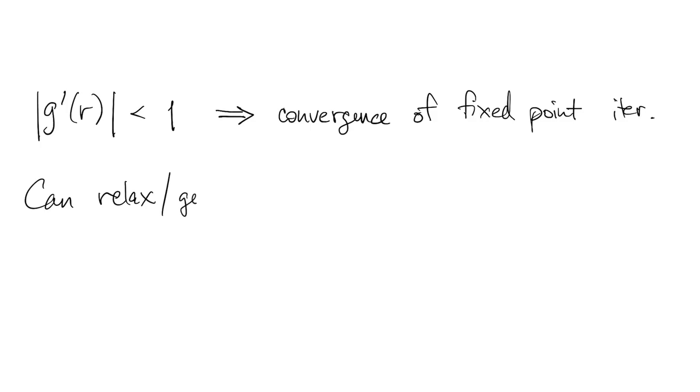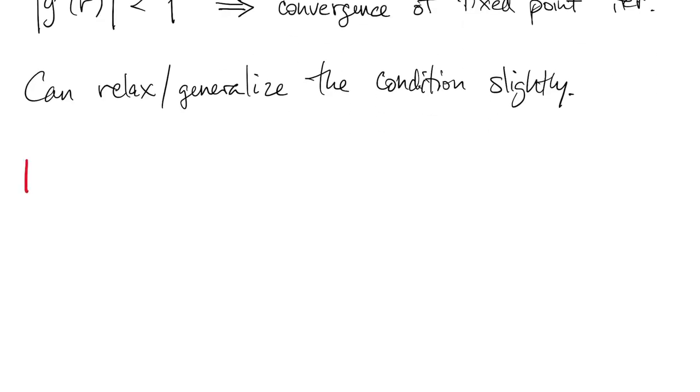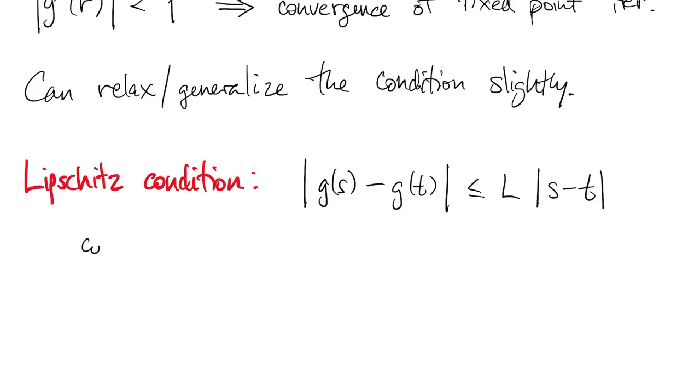This condition can be relaxed a little bit, or generalized to other situations. In math, in analysis, we call it a Lipschitz condition. We say a function satisfies a Lipschitz condition if the absolute value of g of s minus g of t is less than or equal to a constant L times the absolute value of s minus t for all values of s and t in some interval or set.